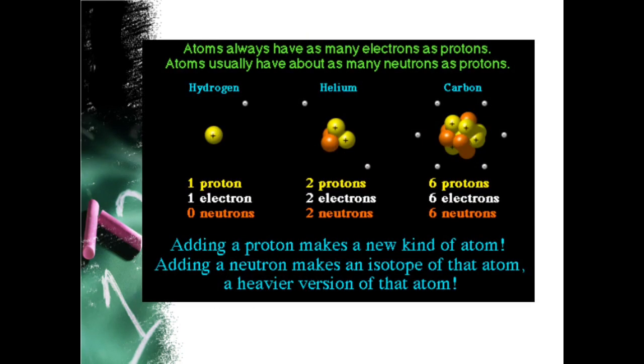Atoms always have as many electrons as protons. Atoms usually have about as many neutrons as protons. Adding a proton makes a new kind of atom. Adding a neutron makes an isotope of the atom, a heavier version of that atom.